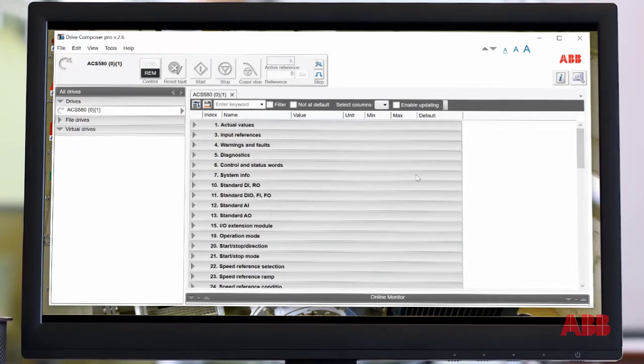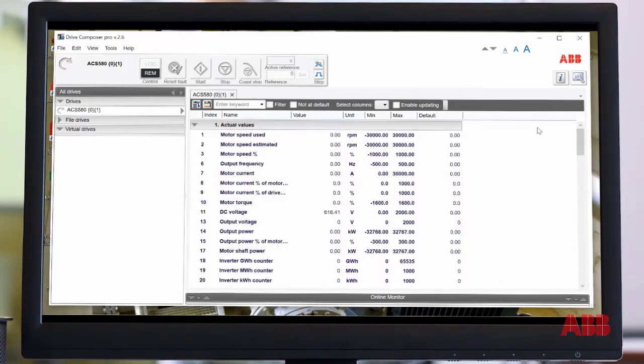The only thing I'd mention here is that if you want to see all of the values change in real time, for example actual values, the only thing you'd want to do is to click on that Enable Updating, and then you'll see everything in the yellow shaded area is highlighted there, so that when you do start the drive, you'll actually have some change of values.